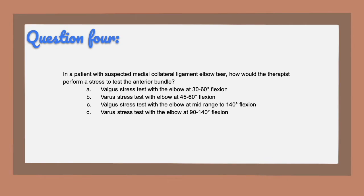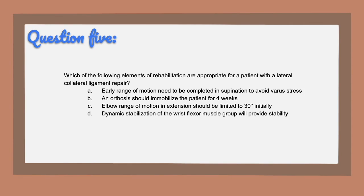Question four, the correct answer is A. We're testing the medial collateral ligament, so we know it's a valgus stress test, not varus. You want to position the elbow at 30 to 60 degrees to stress the anterior MCL the most. To stress the posterior MCL, you would test it in mid-range to 140 degrees of elbow flexion. Question five, the correct answer is C. With an LCL repair, we want to splint at about 90 degrees flexion with pronation or neutral positioning. Early range of motion should be started in neutral to pronation, not supination, because that is a more stressful position on the LCL. Dynamic stabilization of the wrist extensor group will provide stability, not the flexors.